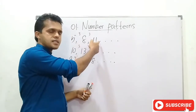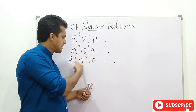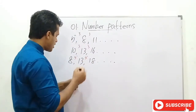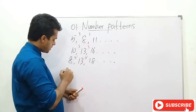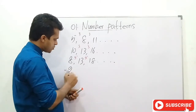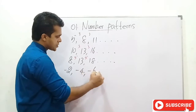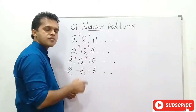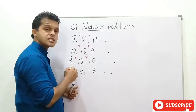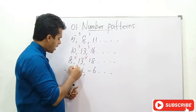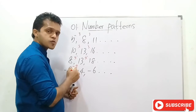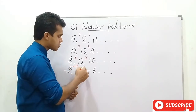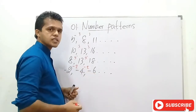Here is a number pattern, here is a number pattern. Think of this number pattern: minus 2, minus 4, minus 6, and so on. Can you imagine what is the common difference of this number pattern? It is minus 2. Minus 2 plus minus 2 equals minus 4; minus 4 plus minus 2 equals minus 6.